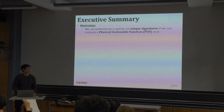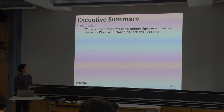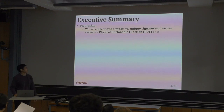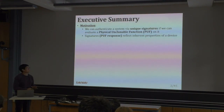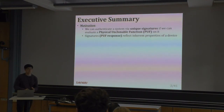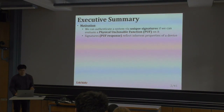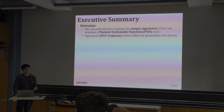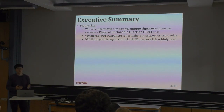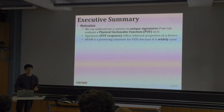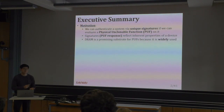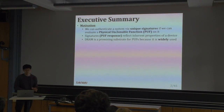The motivation of our work is that we can authenticate a system via unique signatures if we can evaluate a physical unclonable function, or a PUF, on the device. These PUFs result in PUF responses, which are the signatures, and they reflect the inherent properties of the device due to process manufacturing variation. We can uniquely identify a device with these responses. DRAM is a promising substrate for PUFs because they are widely used and in most systems today, so enabling PUFs on DRAM means we can identify and authenticate any system with DRAM on it.